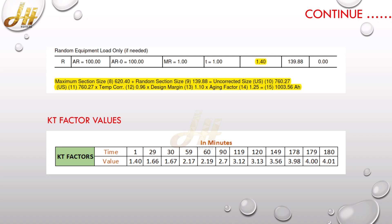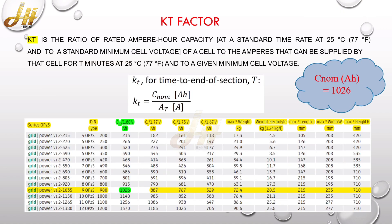Once we arrange the KT factor values, now we will go for what is KT factor and how it can be derived. So what is KT factor? KT is the ratio of the rated ampere capacity of the battery, which is recommended by the manufacturer, with the ampere that can be supplied by the battery.